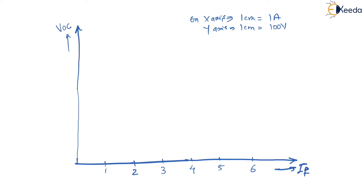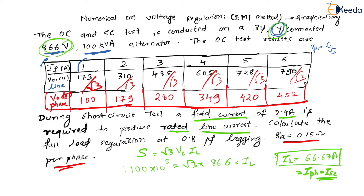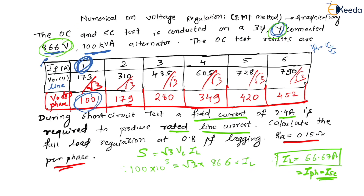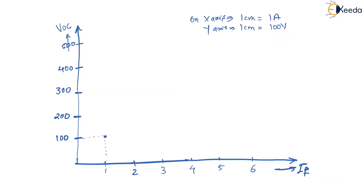On the x-axis, each 1 cm distance indicates 1 A of field current, giving points at 1, 2, 3, 4, 5, 6. On the y-axis, marks are at 100, 200, 300, 400, 500 V. When field current is 1 A, VOC phase = 100 V — this is the first point. When field current is 2 A, VOC = 179 V — the second point, just below 200 V.